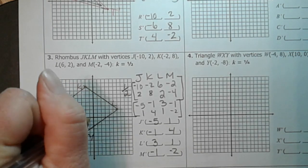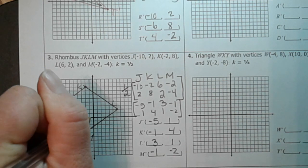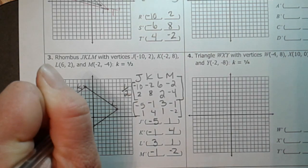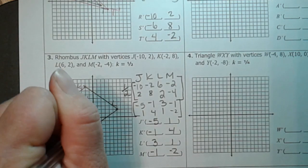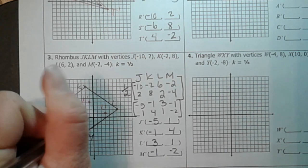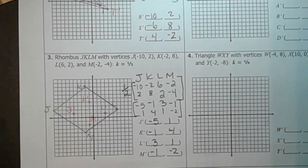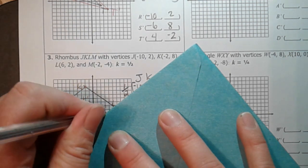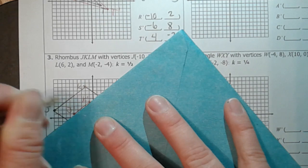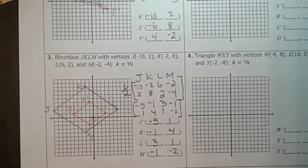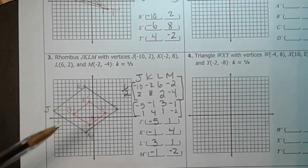So let's graph those. 1, 2, 3, 4. 1, 2, 3, 4, 5, there is j prime. There's k prime. There's l prime. And m prime. Go ahead and connect all of those dots. And you'll see, and we knew this, we predicted this already, that it is smaller than our pre-image. So our pre-image and our image, we saw that this is a reduction because k is less than 1. So that is how you do dilations. It's that simple.